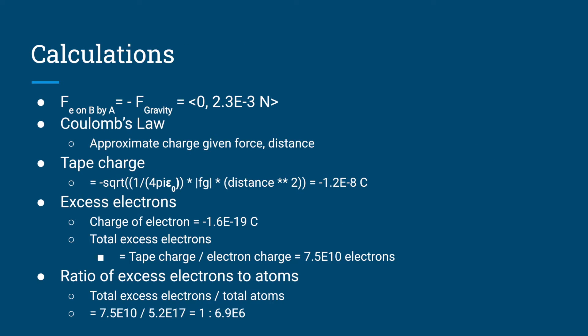Since we know that the electric force on the tape equals the negative force of gravity, we can solve for the electric force on B: zero newtons horizontally and 2.3 times 10 to the negative 3 newtons vertically. Using Coulomb's Law, we can approximate tape A's charge given the resulting force at a known distance. Isolating charge in Coulomb's Law, we find that the charge of each tape is negative 1.2 times 10 to the negative 8 Coulombs.